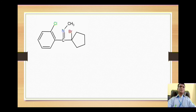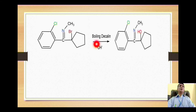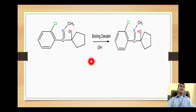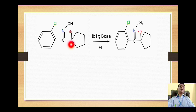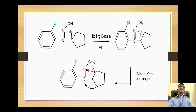This imine is then reacted with boiling decaline in the presence of a base, which generates hydroxide ions. The hydroxide ion attacks the carbon attached with bromine, giving a nucleophilic substitution reaction of the SN1 type, yielding the hydroxylated derivative.